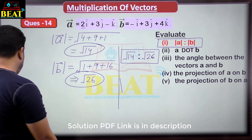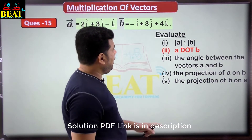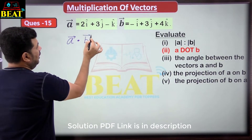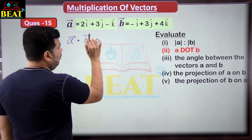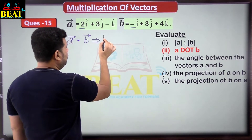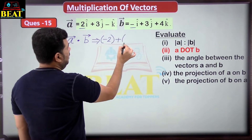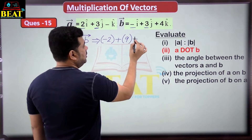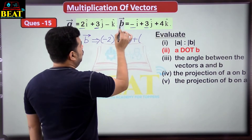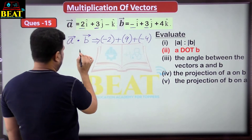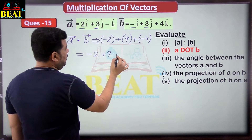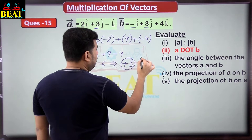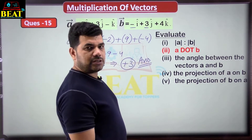Question 15: find A dot B. In dot product, multiply corresponding components: I-components: 2 × (-1) = -2. J-components: 3 × 3 = 9. K-components: (-1) × 4 = -4. So A dot B = -2 + 9 - 4 = 3.